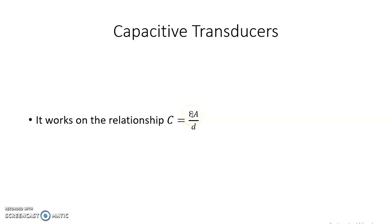Here epsilon is the permittivity of the medium, where epsilon equals epsilon naught into epsilon r. Epsilon r is the relative permittivity of the medium and epsilon zero is the permittivity of free space. A is the overlapping area of the plates, and d is the distance between the two plates.